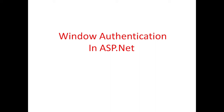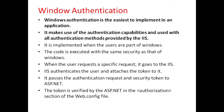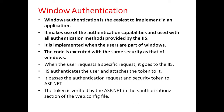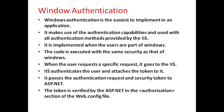Here we will see Windows authentication in ASP.NET. Windows authentication is the easiest way to implement in an application. It makes use of authentication capabilities and is used with all the authentication methods provided by IIS. It is implemented when the users are part of Windows, and the code is executed with the same security as that of Windows. When the user sends a request, it goes to IIS. IIS authenticates the user and attaches a token to it, passing the authentication request and security token to ASP.NET. The token is then verified by ASP.NET in the authorization section of the web.config.